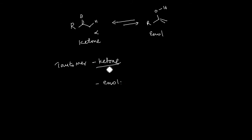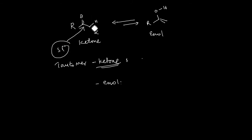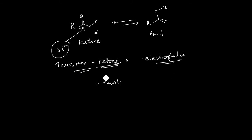Let us start with ketone. This ketone has an sp2 carbon atom connected to the more electronegative oxygen, so it is electrophilic. That means it can be attacked by nucleophiles. So tautomer ketone is electrophilic and can be attacked by nucleophiles. And tautomer enol is nucleophilic.